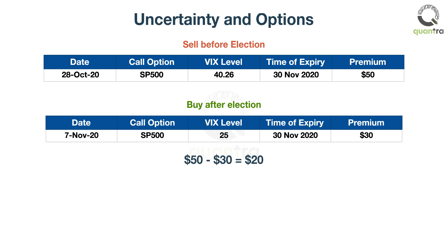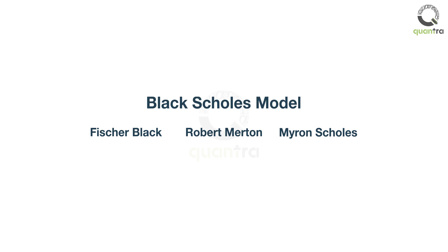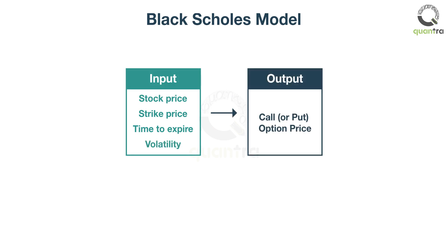Of course, volatility is just one component of calculating option prices. But how are option prices calculated? Fischer Black, Robert Merton, and Myron Scholes developed a model to calculate a fair value for the option. This is called the Black-Scholes model. It takes the stock price, strike price, time to expiry, and the volatility as input, and then gives you the call or put option price. The Black-Scholes model caused a huge revolution in the options world and is still used today.